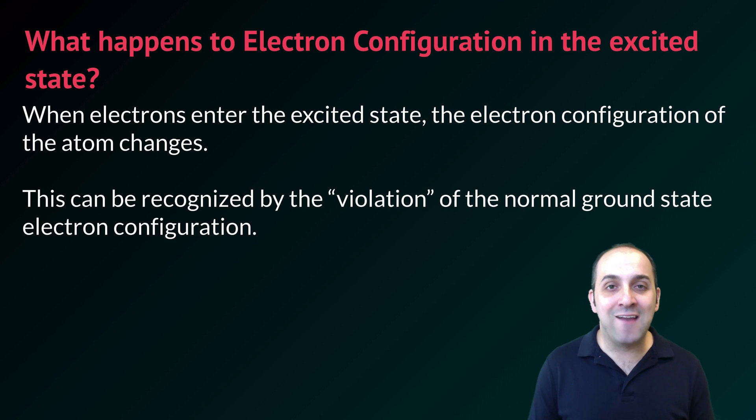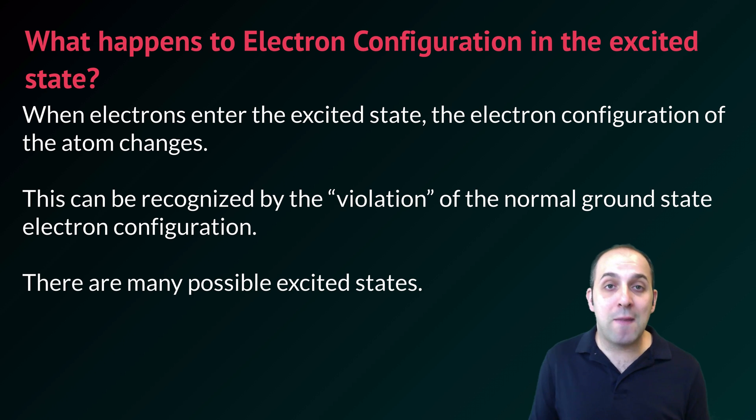We can recognize this when we see it by understanding that we'll see a violation of the normal ground state electron configuration when we look at the electron configuration of an atom in the excited state. It's also important to understand that there are many possible excited states that an atom could take. So just because you might not see the one that you're thinking of in this discussion, it doesn't mean that it's not a valid configuration.